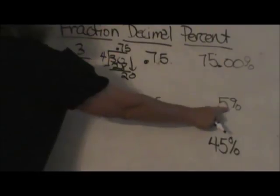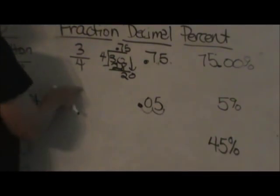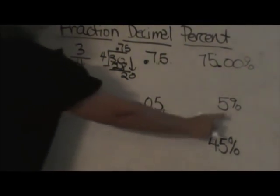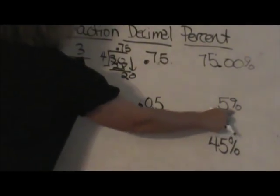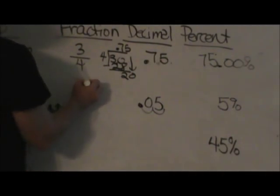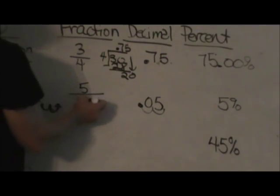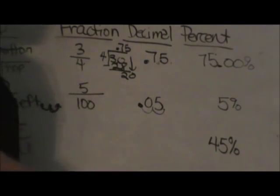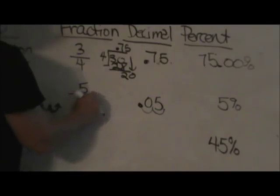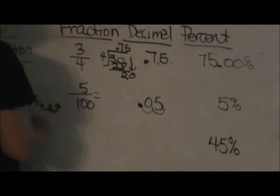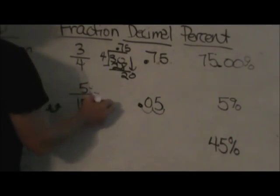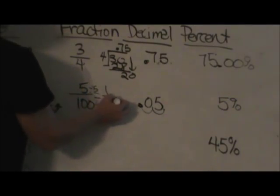But to go from percent back over here to the fraction. Remember, five percent means five per one hundred. So that means five per, which means division, one hundred. So it's five over one hundred. All you need to do now is reduce. So let's reduce by five. I divide the top and the bottom by five and I get one twentieth. So that is my fraction.